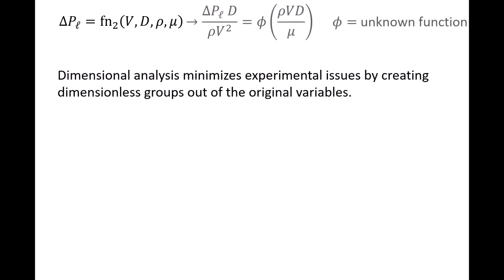In later videos, we'll show how these five original variables can be combined into two groupings that are dimensionless. The first dimensionless group contains the dependent variable and is delta PL, D, over rho, V squared. The second dimensionless group is rho, V, D, over mu. We write the relationship between the two dimensionless groups as the first dimensionless group equals some unknown function phi of the second dimensionless group. And you may recognize that the second dimensionless group is the Reynolds number, RE.